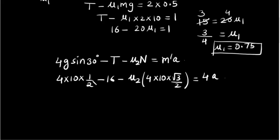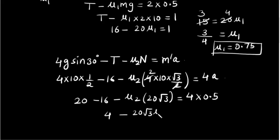Now we have 20 minus 16 minus mu2 times 20 root 3 is equal to 4 times 0.5. So this is 4 minus 20 root 3 mu2 is equal to 2. Now 2 is equal to 20 root 3 mu2.